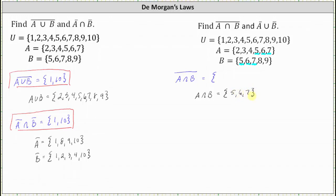Therefore, the complement of the intersection of A and B is the set containing the elements that are not in A intersect B, but in the universal set. Comparing A intersect B to the universal set, the elements not in the intersection are {1, 2, 3, 4, 8, 9, 10}. The complement of the intersection of A and B is the set containing {1, 2, 3, 4, 8, 9, 10}.